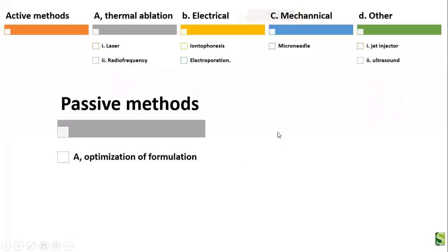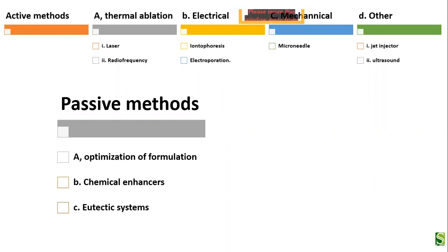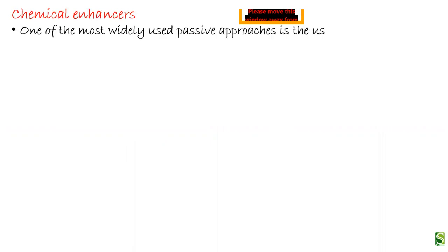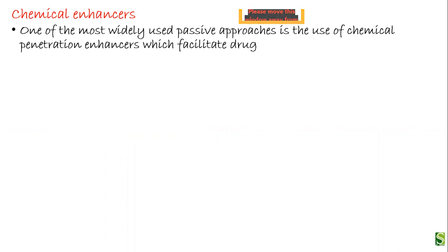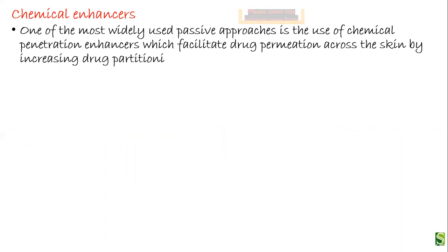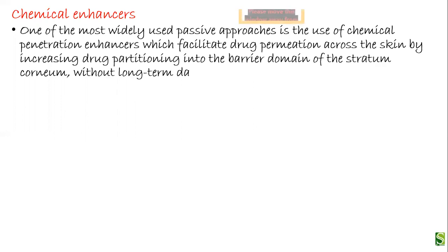The next method is the passive method. You can either optimize the formulation, use chemical enhancers, use eutectic systems, or prodrugs might also be used. The most important type of enhancer is the chemical enhancer. It is one of the most widely used passive approaches, and it facilitates drug permeation across the skin by increasing the drug partitioning into the barrier domain of the stratum corneum without long-term damage to the skin.